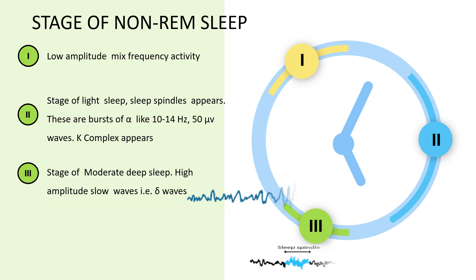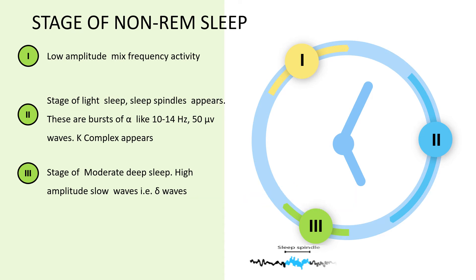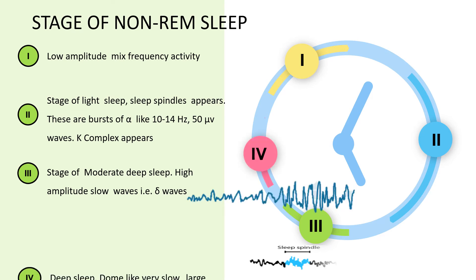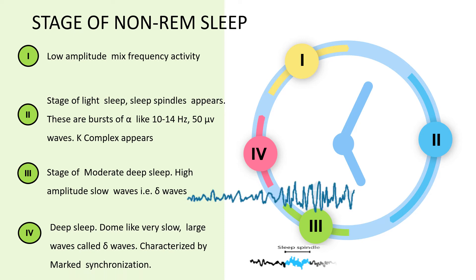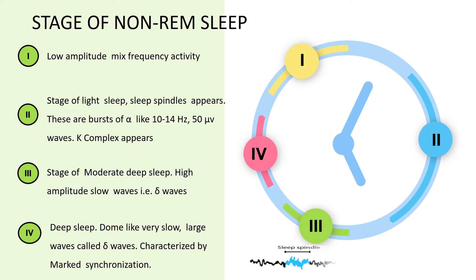Stage three, or the stage of moderate deep sleep: the EEG is characterized by display of high-amplitude, slow waves called delta waves. Stage four is the stage of deep sleep; here the EEG pattern has dome-like, very slow, large delta waves. The characteristic of deep sleep is a pattern of rhythmic slow waves indicating marked desynchronization. All four stages of non-REM sleep continue alternately with REM sleep.